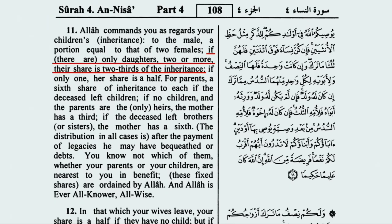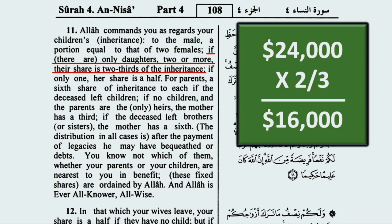How much of the $24,000 will his daughters inherit? Allah, the all-wise, tells us: if there are only daughters — no sons — two or more, their share is two-thirds of the inheritance. So two-thirds of $24,000 will be divided among his three daughters. One-third of $24,000 is $8,000, so two-thirds of $24,000 is $16,000. $16,000 goes to the daughters. No problem there.